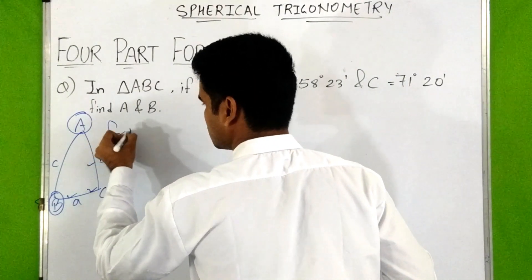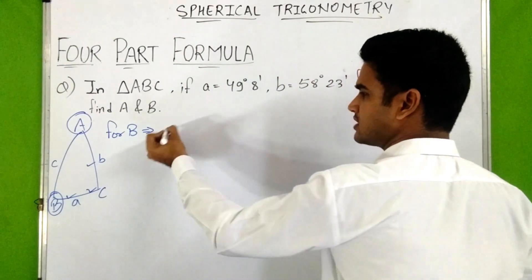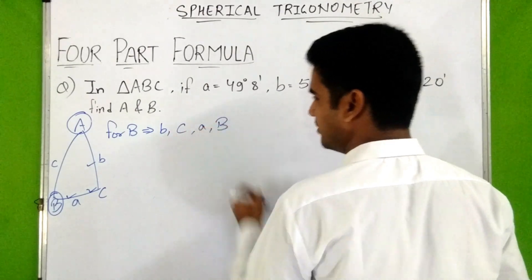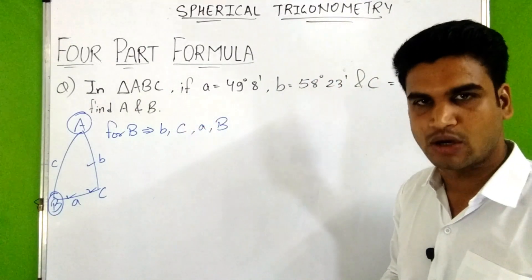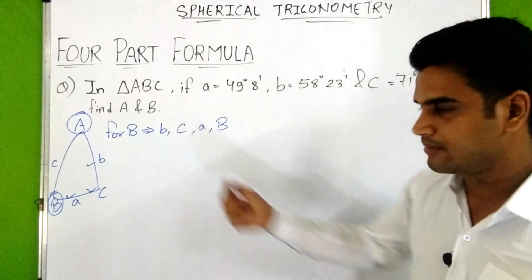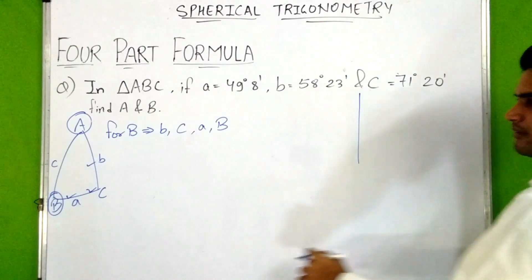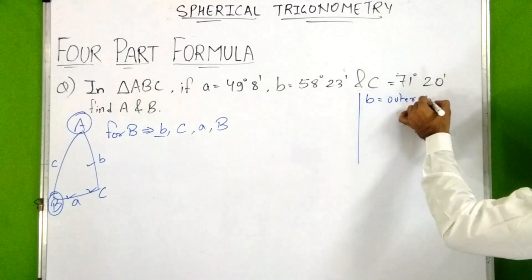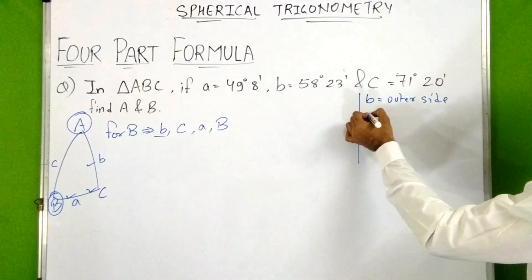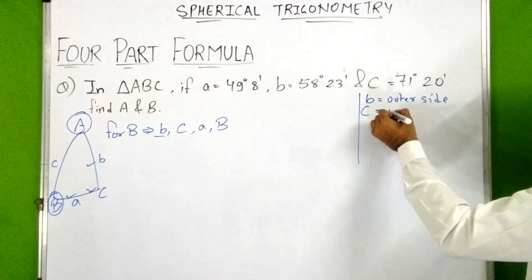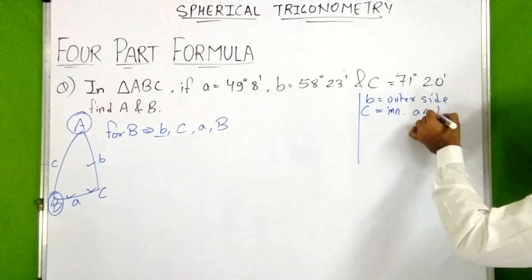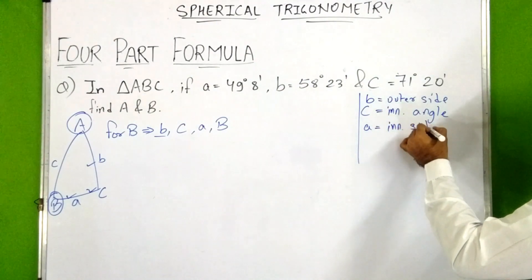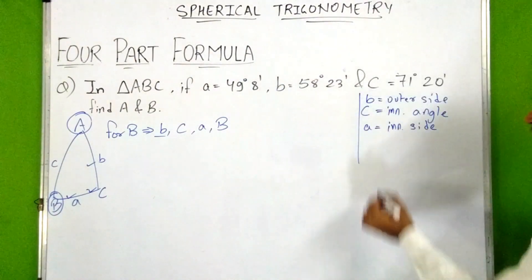First we solve for B. We consider the four parts: small b, capital C, small a, capital B. The first and last parts are outer parts. Small b is a side, so it is outer side. Capital C is an angle and it is inner, so it is inner angle. Small a is a side and it is inner, so it is inner side. Capital B is an angle and it is the last part, so it is outer angle.